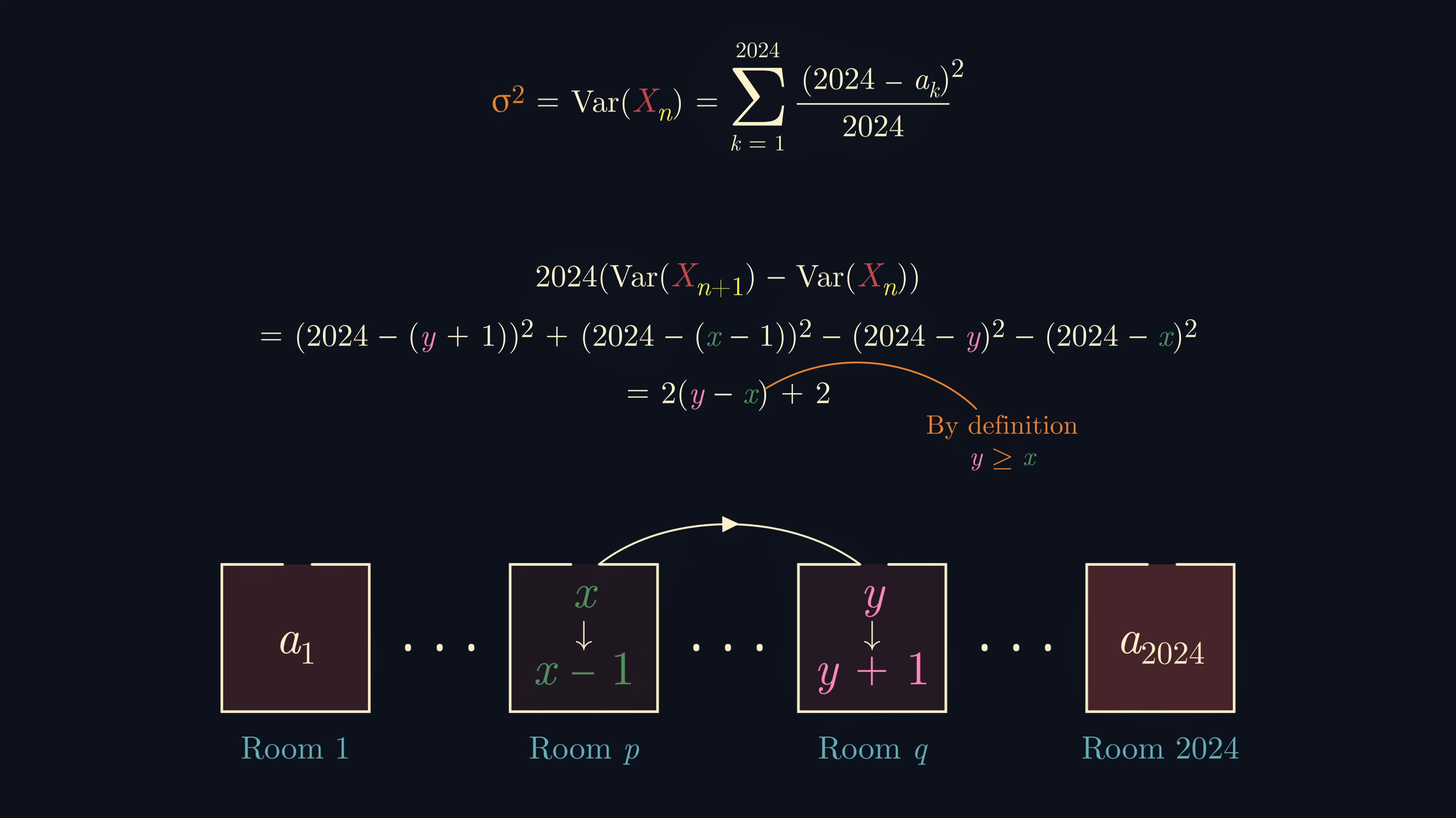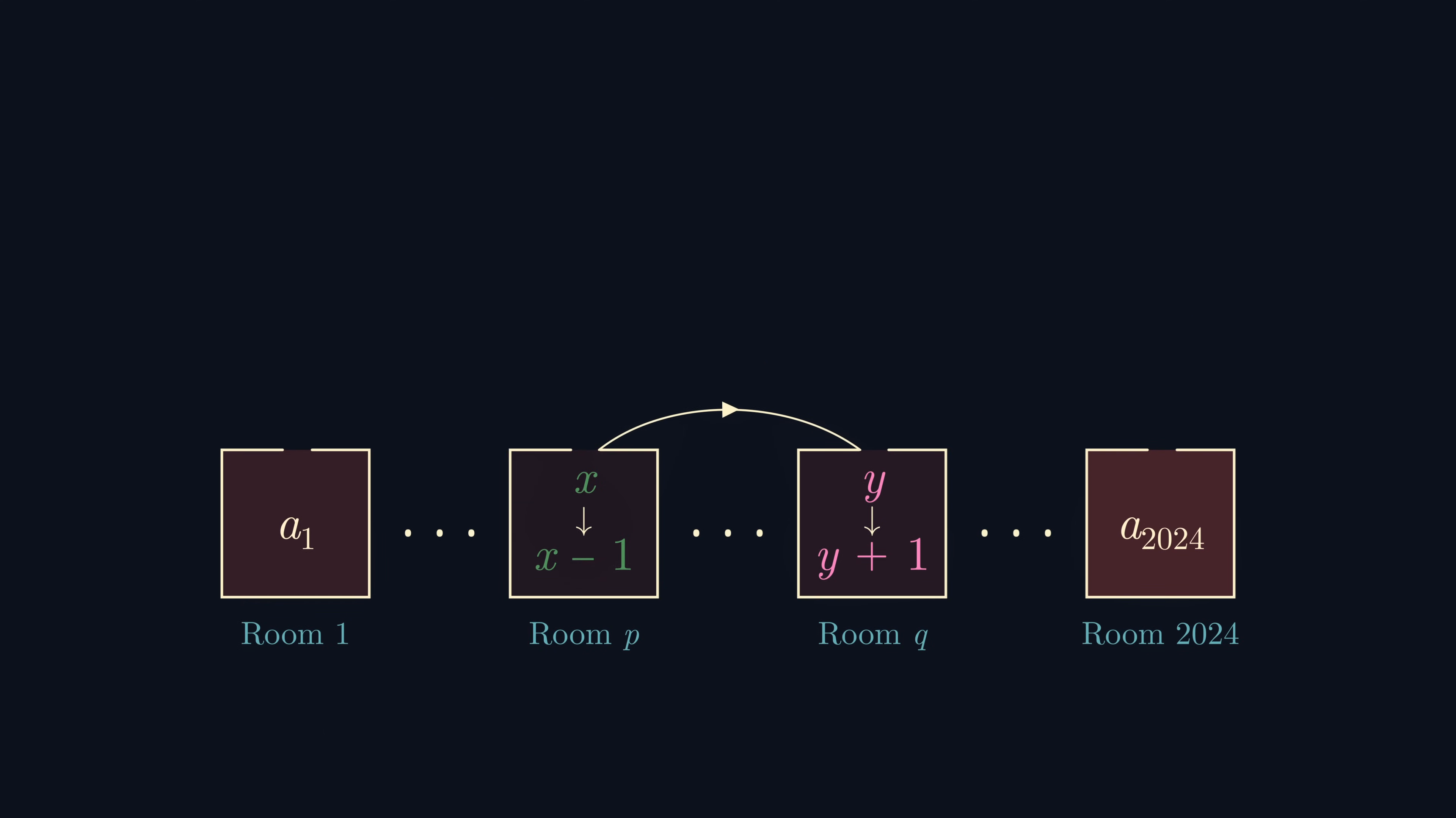But this all nicely simplifies down into 2 times by y minus x plus 2. But since y is at least as large as x, y minus x is non-negative, so the difference in variances is always positive.